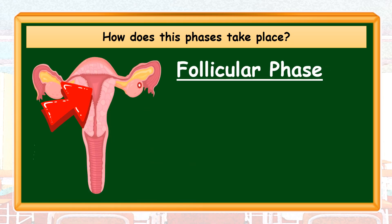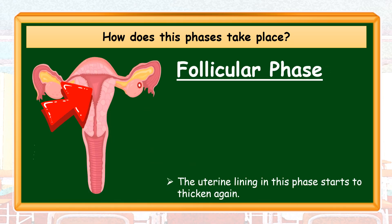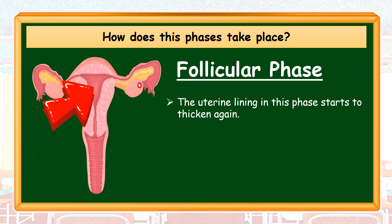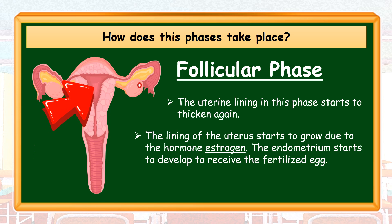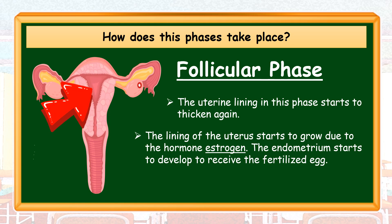Follicular Phase: The uterine lining in this phase starts to thicken again. The lining of the uterus starts to grow due to the hormone estrogen. The endometrium starts to develop to receive the fertilized egg.